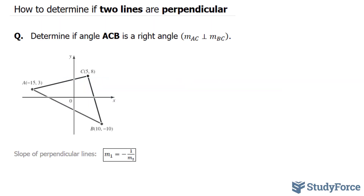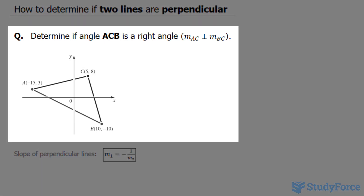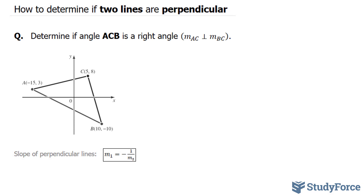In this video, I'll show you how to determine if two lines are perpendicular. The question reads: determine if angle ACB — notice we have the point A, C, and B — is a right angle. That's mathematically represented by this symbol, where this symbol represents perpendicular, or a right angle.